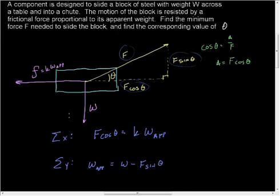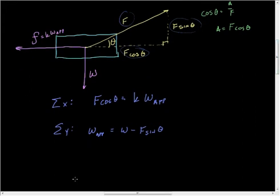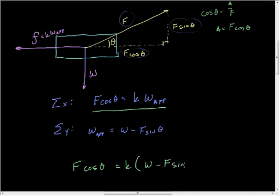From all of this we can now start looking at what the force is. And so if we look at this, then our force is apparent, and we're going to use the X here. The force cosine theta is equal to K times, and now this is W minus F sine theta. Remember up here, the frictional force is equal to K times the apparent weight. Well, the apparent weight is W minus, or is the weight minus how much we're lifting it.